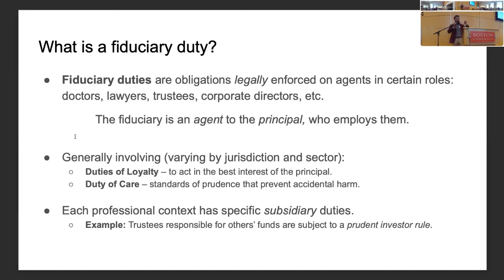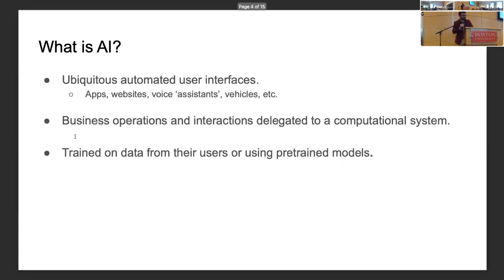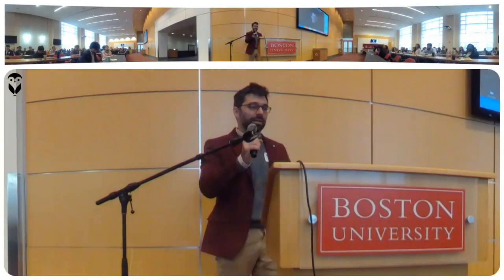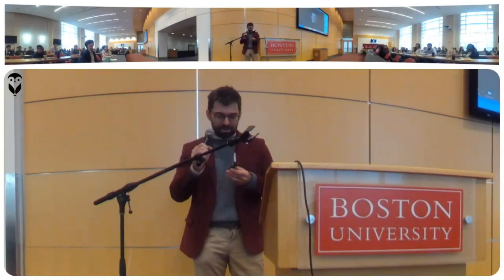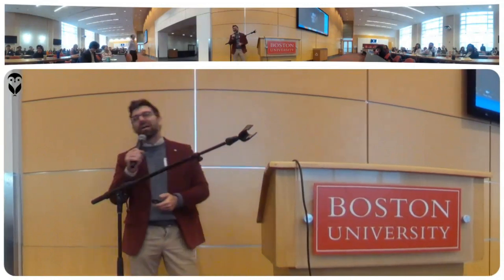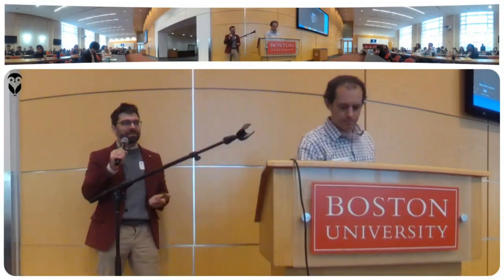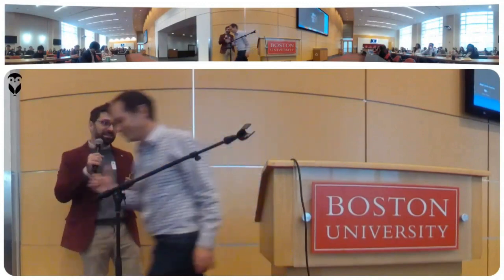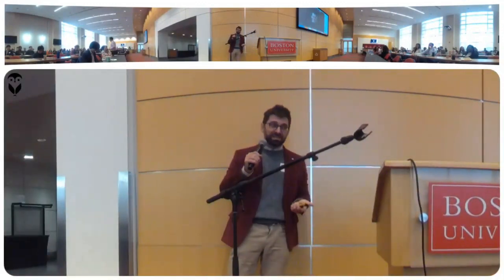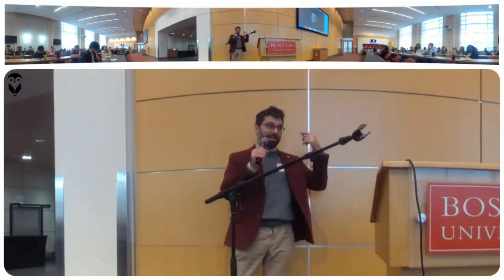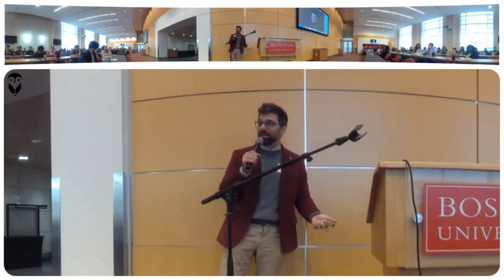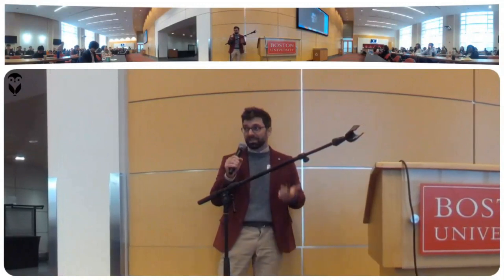For each professional context, these general duties are refined in specific ways called subsidiary duties. For example, a trustee responsible for managing somebody else's funds is subject to a prudent investor rule — a specific rule about how to be careful when managing someone else's property. By AI, we mean the most general possible definition: not just generative AI, but the ubiquitous automated user interfaces — whether apps, websites, vehicles, or voice assistants — and the automated business operations behind those interactions, often trained on user data or using combination models.